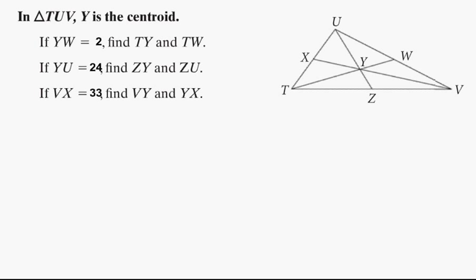Alright, we're going to do some examples of problems using the centroid, which is the point of concurrency of the medians of a triangle. We know some relationships with these medians: the distance from the midpoint of one side to the centroid is one-third of the total distance, and it's also one-half the distance from the centroid to the vertex. We're going to use those relationships to find the lengths of these segments.